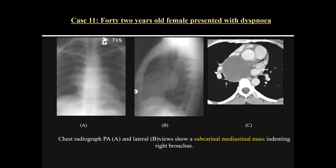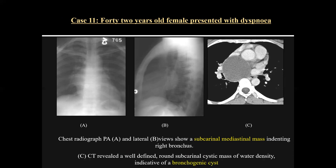Case eleven was a 42-year-old female presenting with dyspnea. On chest radiograph in PA and lateral view, there was a subcarinal mediastinal mass in the right bronchial region, with the subcarinal location being the most important feature. On contrast CT, there was a well-defined round subcarinal cystic mass of water density, consistent with a bronchogenic cyst.